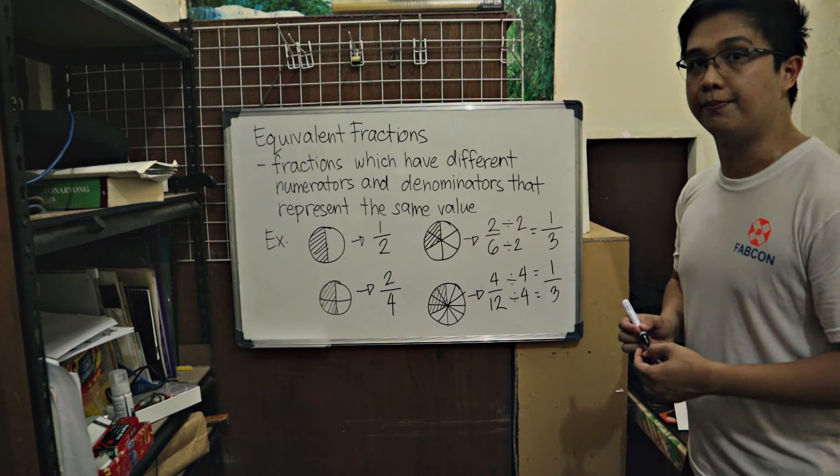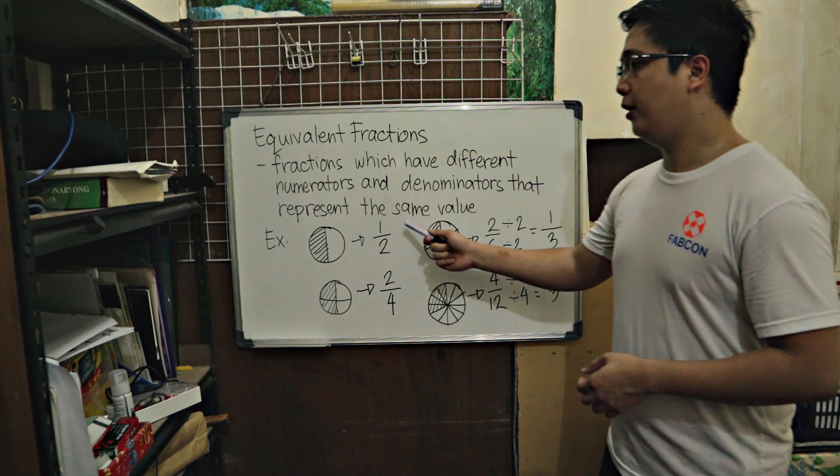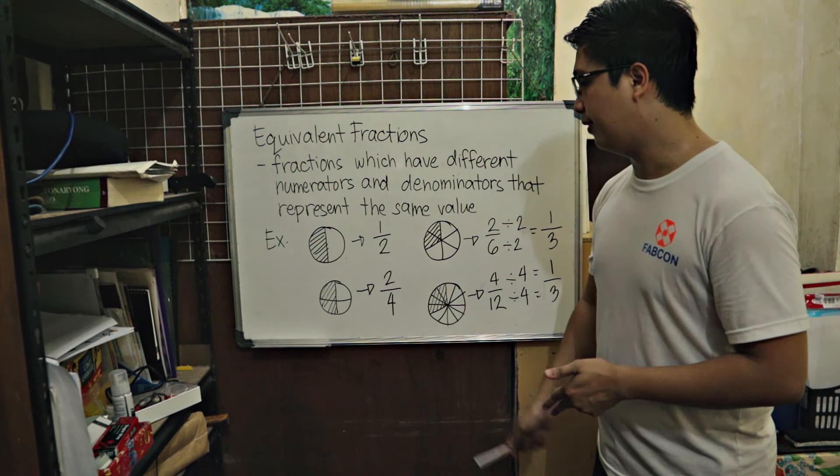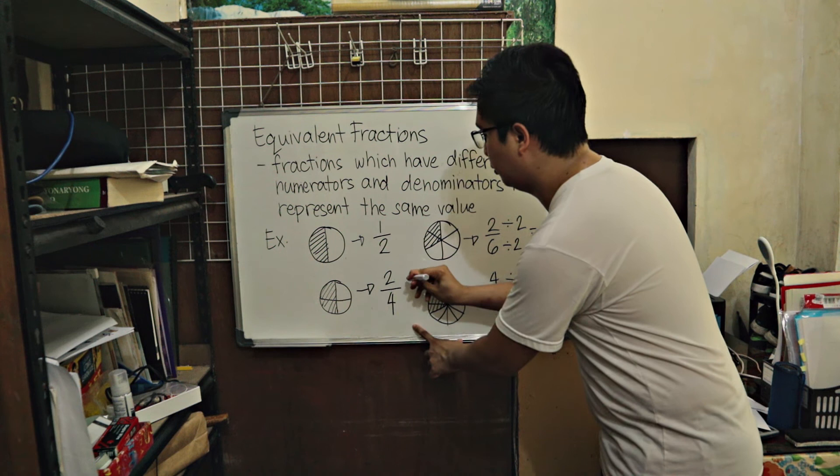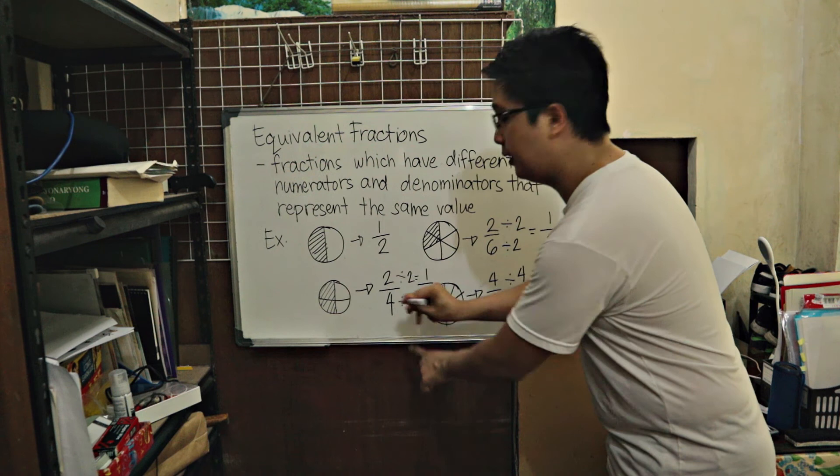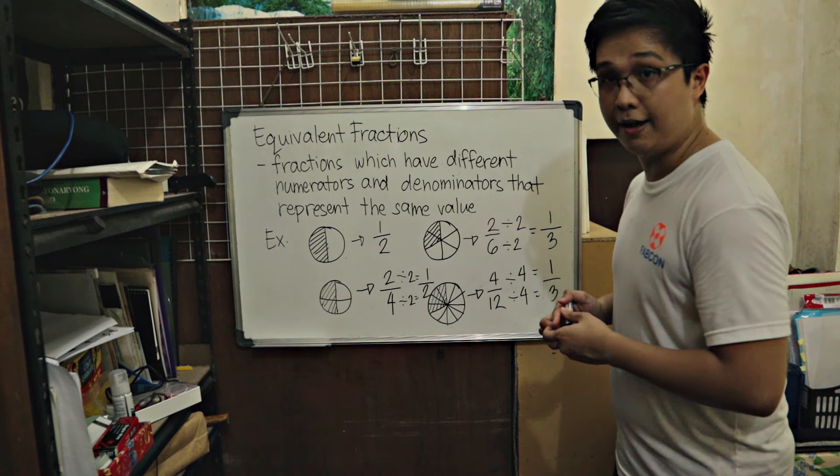Try to simplify the 2 here. 1 half is already simplified. 2 fourths can still be simplified. We look for a number that can divide 2 and 4, that is 2. So, 2 divided by 2 and 4 divided by 2, this one is equal to 2 divided by 2 that is 1 and 4 divided by 2 that is 2. The simplified form is 1 half. 1 half is the same as 1 half. Therefore, we also say that 1 half and 2 fourths are equivalent fractions.